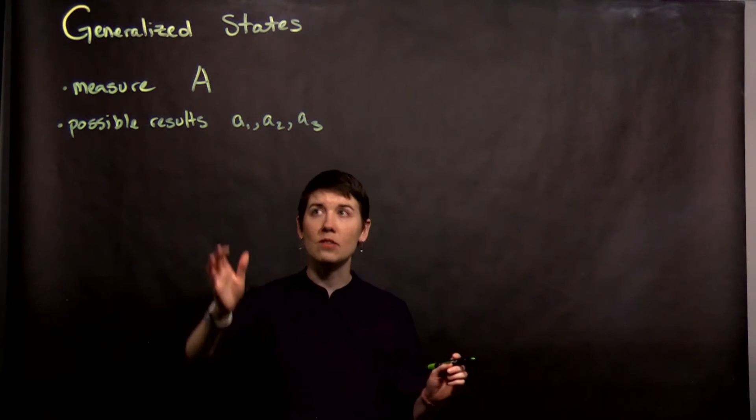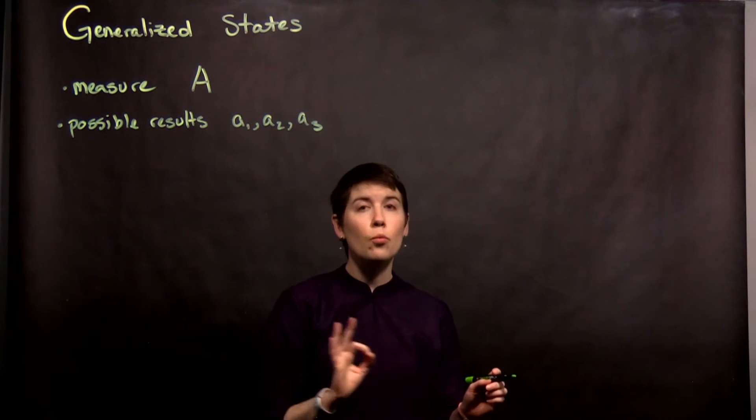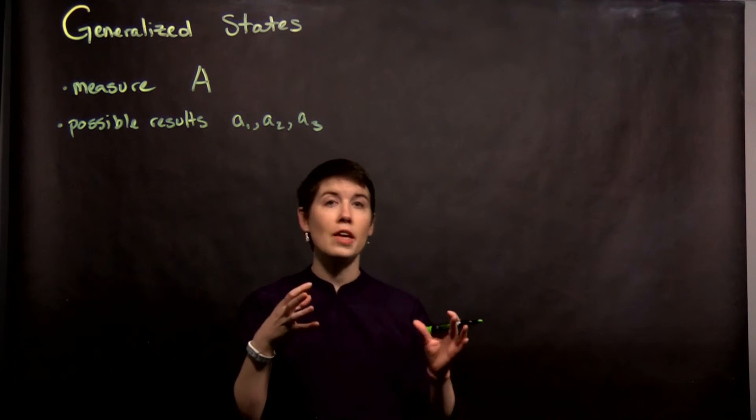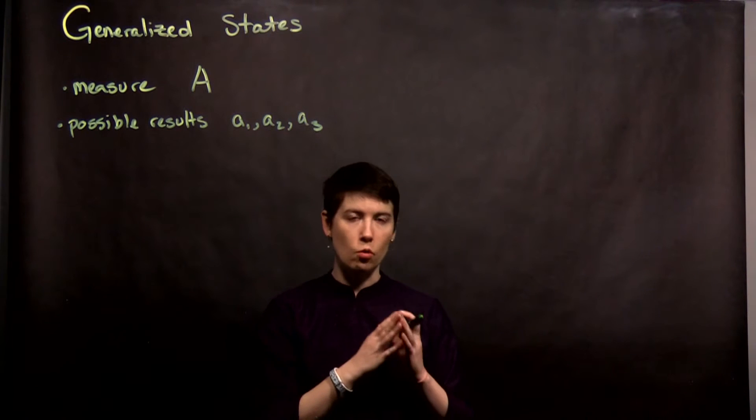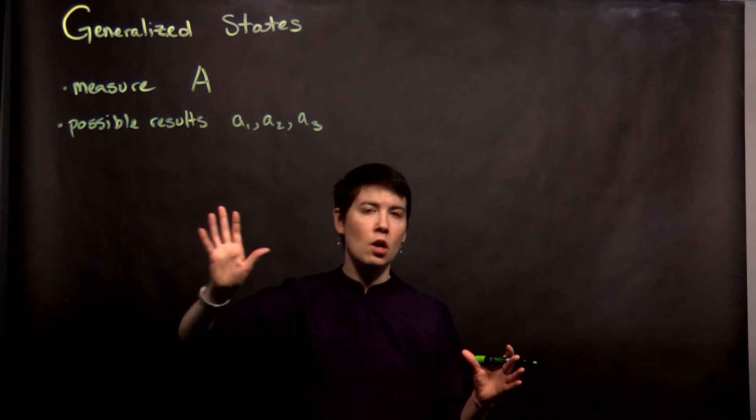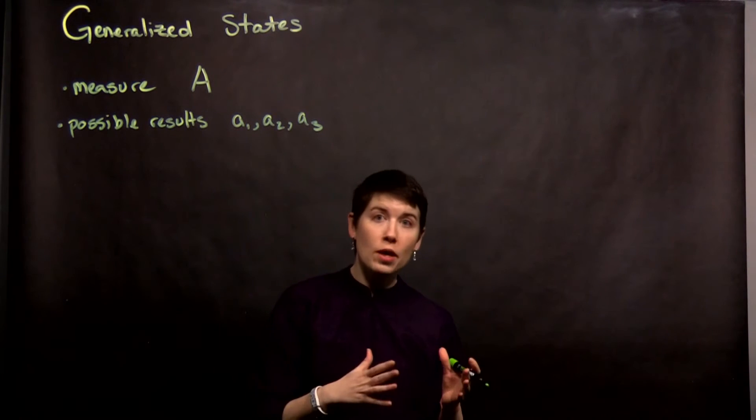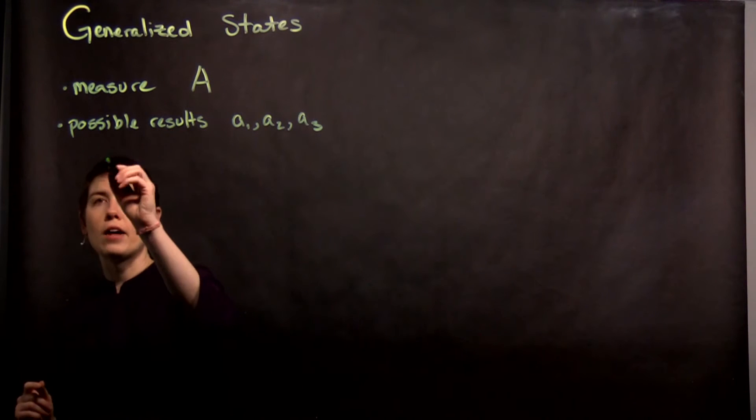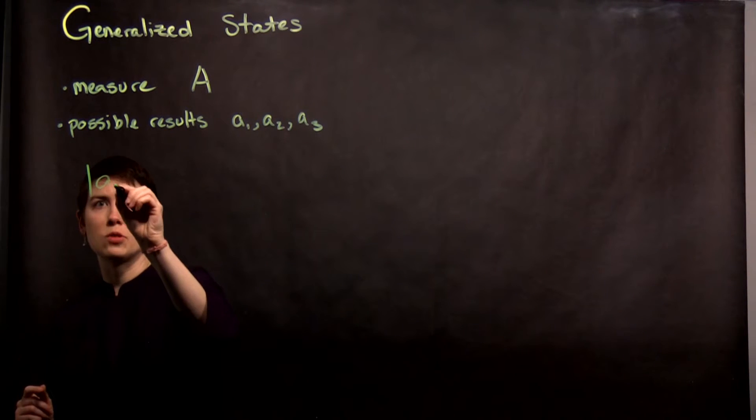What that means is since there's three possible discrete results, this is going to be three basis vectors. So we have to introduce three ket states which are going to be the fundamental possible states that make up this space. Again, for spin 1/2 we have two possible states up and down that span the space. Here we're actually going to have three to span the space.